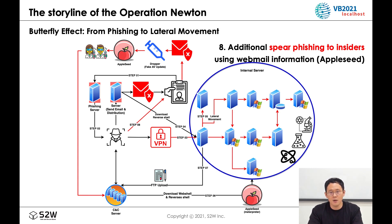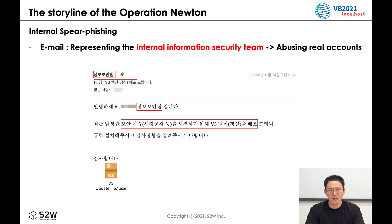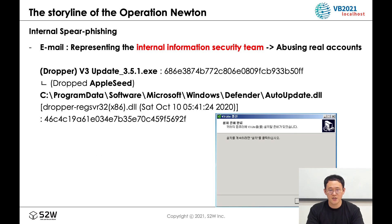Actual accounts obtained through phishing attacks were used to carry out further attacks targeting internal researchers and engineers. To increase the trust of the receiver, the email account representing the internal information security team among the stolen accounts was abused. It was disguised as an attachment related to antivirus updates by abusing a security notice during incident response. Masquerading as a V3 antivirus installation file, an installation screen is displayed when running, but the decompressed malware self-deletes, replicates, and registers as a service for execution in the background.